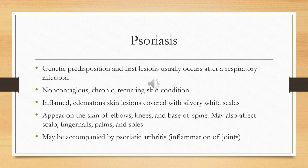Psoriasis is a chronic, non-contagious inflammatory skin disease. You might notice reddish papules — solid elevations — and plaques covered with silvery scales. These can appear on the elbows, knees, base of the spine, scalp, fingernails, palms, and soles of the feet. It's a recurrent condition with periods of remission and exacerbation, and there is a genetic predisposition.